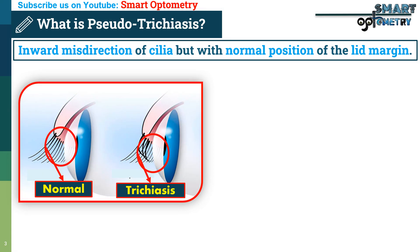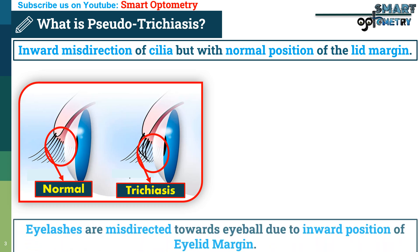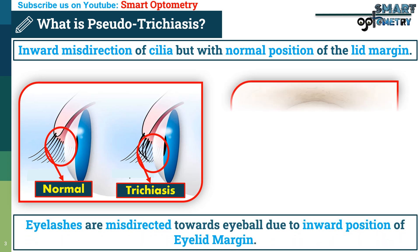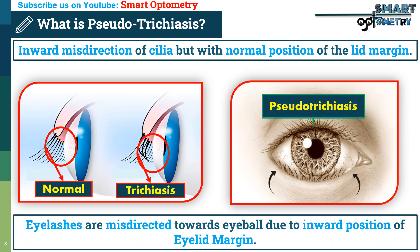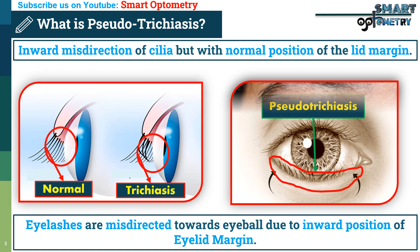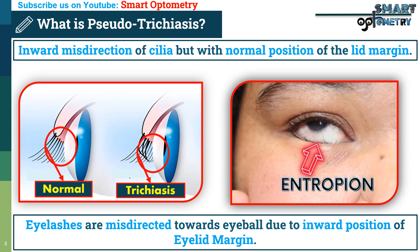Now, what is pseudotrichiasis? In pseudotrichiasis, the eyelashes are misdirected towards the eyeball due to inward malposition of the eyelid margin, not because of misdirected cilia. An example of pseudotrichiasis is entropion, where the eyelid margin is misdirected inwards and causes inward misdirection of cilia or eyelashes.